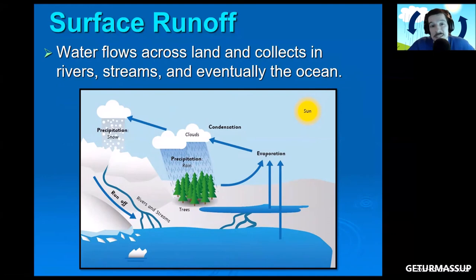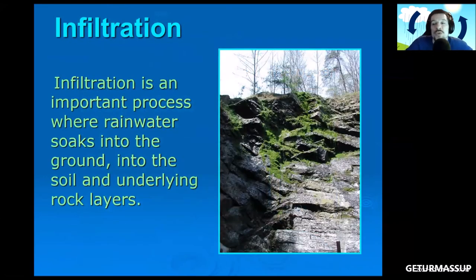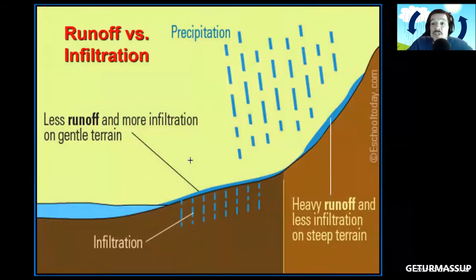Guess what, we're moving on to that other thing - infiltration. Infiltration is an important process where rainwater soaks into the ground, into the soil and underlying rock layers. In this image, we're looking at runoff versus infiltration. We see that we're going to get less runoff and more infiltration on gentle or flat terrain. If we're on heavy, steep terrain, we're going to have more runoff and less infiltration. Water needs to sit on the ground to give it time to infiltrate.